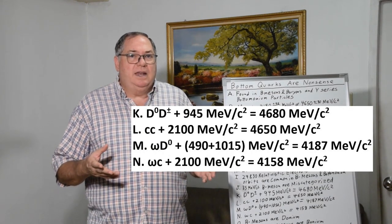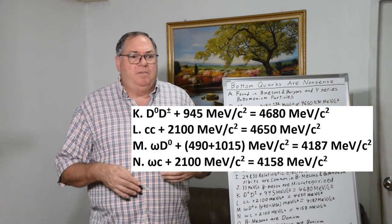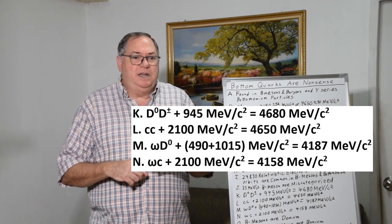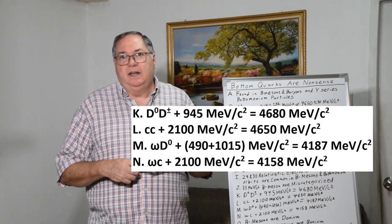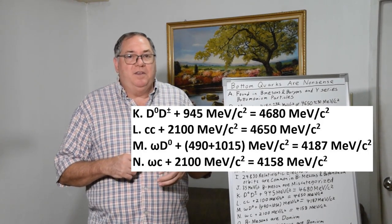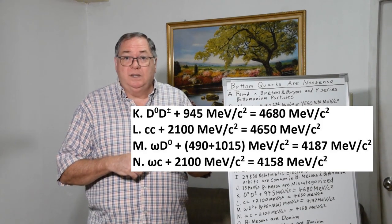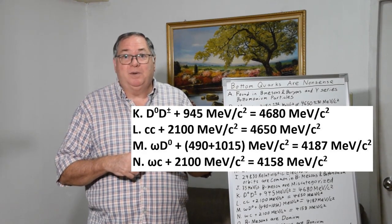We can look at estimating the mass. If you take a neutral D meson and a charm meson and 945 MeV, you get 4680 MeV/c². If you take two charm quarks in an onium resonance with 2100 MeV/c², you get 4650.